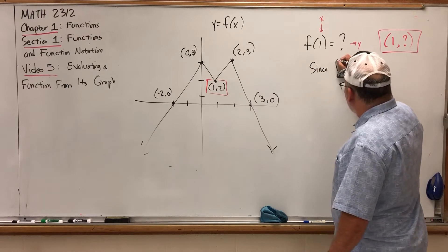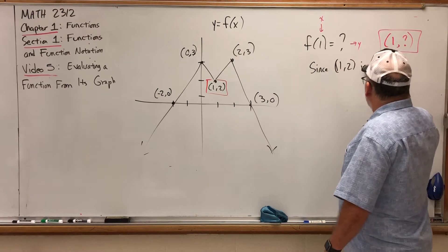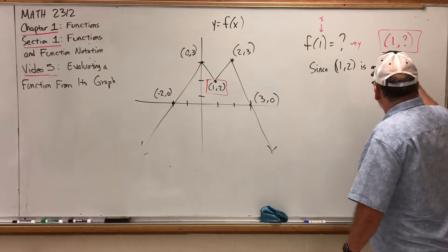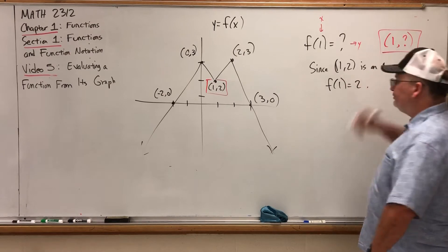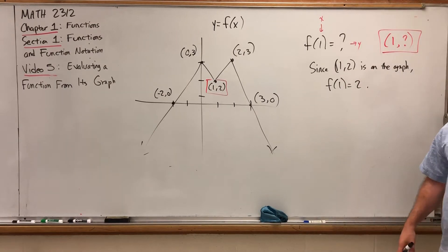Since 1 comma 2 is on the graph, f of 1 is equal to 2.